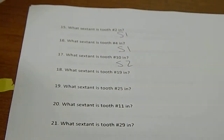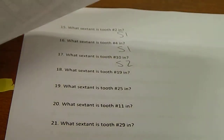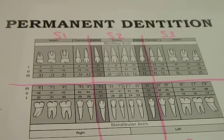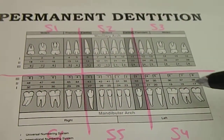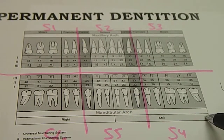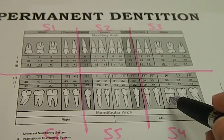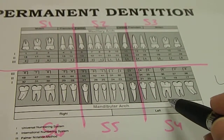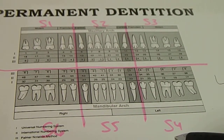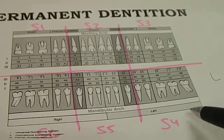What sextant is tooth number 19 in? We know we're on the bottom arch because one through sixteen is on top. Seventeen, eighteen, nineteen — nineteen is our first molar on the left-hand side. It's a posterior tooth, so it's going to be in sextant four.